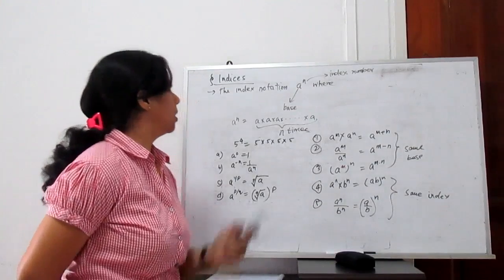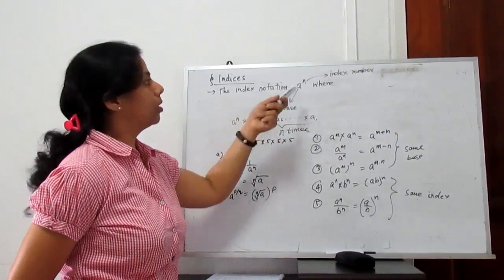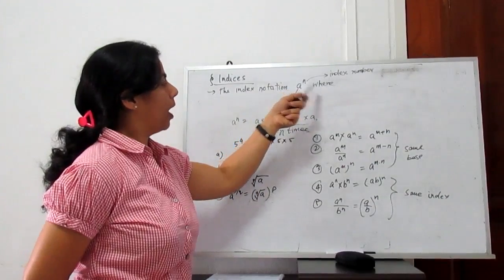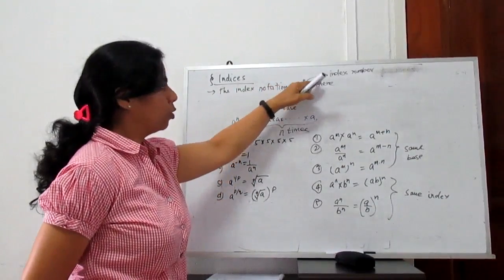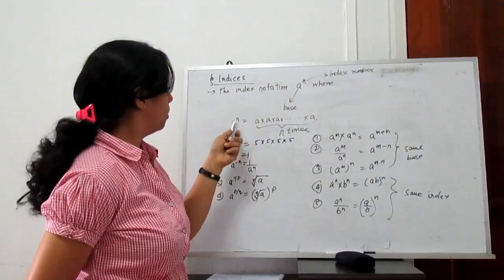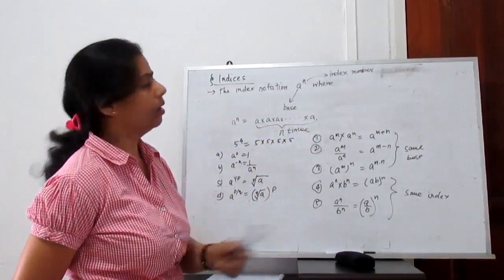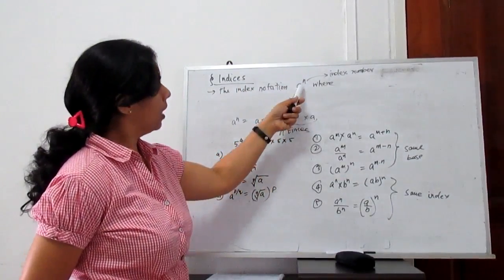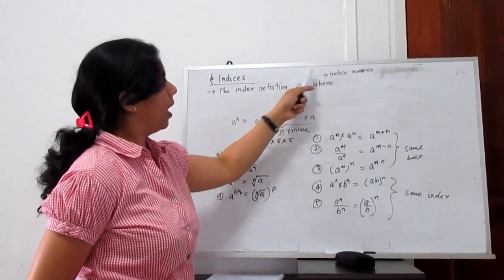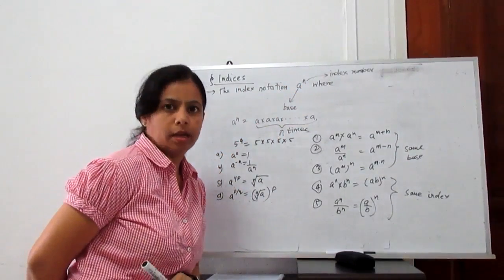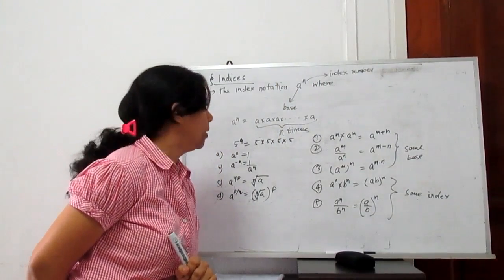What is indices? You know the index notation for a to the power n. What do we mean by a to the power n? It means a multiplied n times, where a is called the base and n is called the index number. That you have already studied earlier.